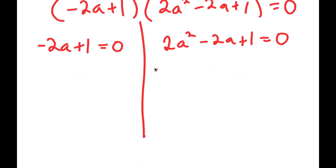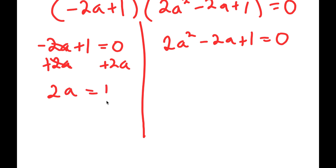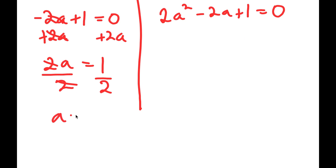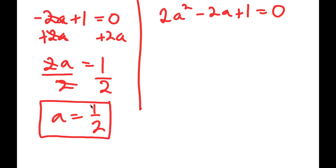I'm going to solve each of these equations individually. For negative 2a plus 1 equals 0, all I have to do is add 2a on both sides, and I get 2a is equal to 1. If I divide both sides by 2, these two cancel out and I get a is equal to 1 half. So this is one solution for a.